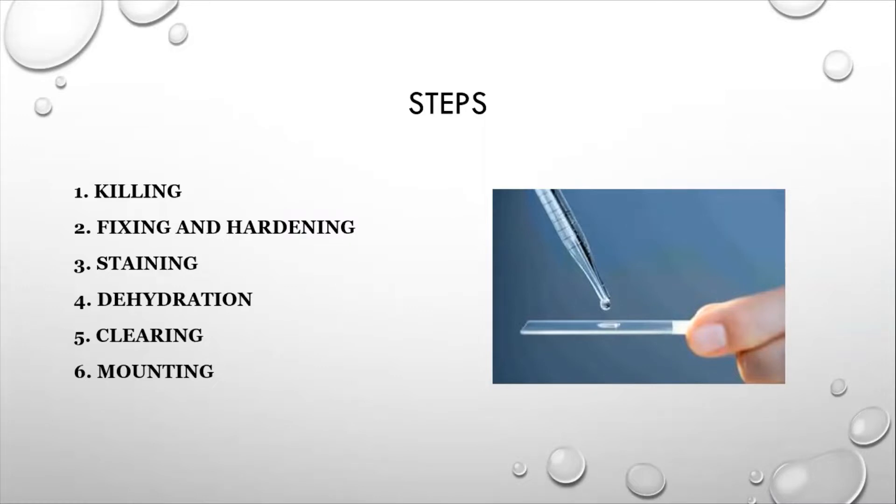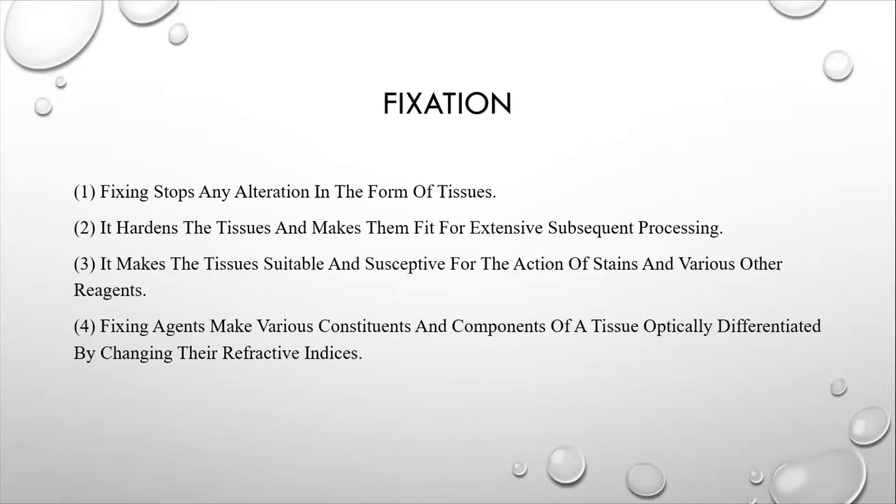We are not doing here killing because we are using the samples of chemicals. Let me explain each one of them. Fixation stops any alteration in the form of tissues. It hardens the tissues and makes them fit for extensive subsequent processes. It makes the tissues stable and susceptible for the action of stains and various other reagents. Fixing agents make various constituents and components of a tissue optically differentiated by changing their refractive indexes.